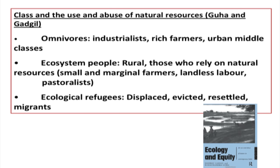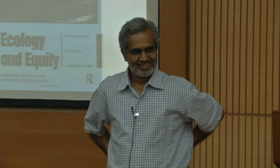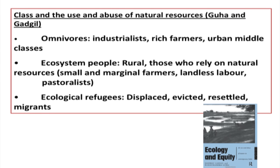The three groups identified are: omnivores, ecosystem people, and a third group. Ecosystem people are those who directly depend on resources for their livelihood — mostly small farmers, landless labor, nomadic pastoralists who graze livestock, and tribal people. The argument is that omnivores, in their model of development, bring more and more area under their control for factories, power plants, ports, cities, and housing. Gradually the second group — ecosystem people — are displaced from their land and become ecological refugees, living in urban slums as the urban poor.